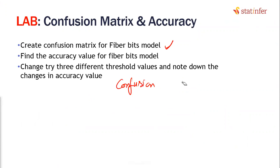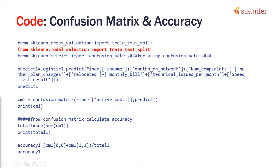Usually anything above 80% is considered a good model — that is the generally accepted industry standard, though it can vary by industry. So in any classification model, right after building the model, the first measure you check is the confusion matrix and the accuracy derived from it. Remember this, because for any categorical or classification problem we do later on, we will use the same technique. Confusion matrix and accuracy will come back again and again as we cover more classification algorithms beyond logistic regression.